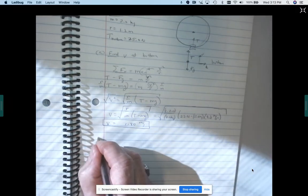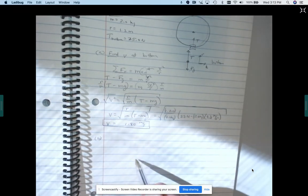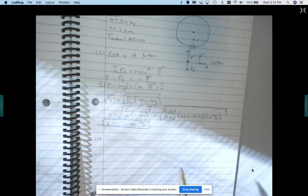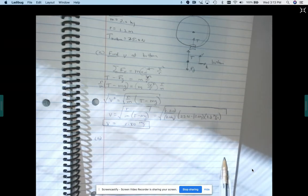All right, and then part B, it says what's the speed needed to go at the top so that the, just before the rope is going to go slack.